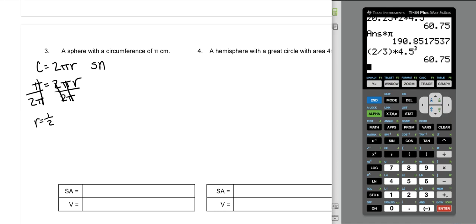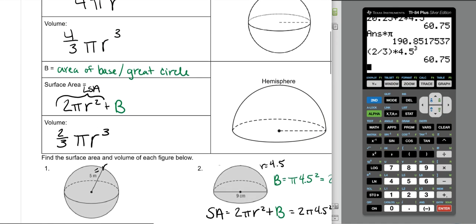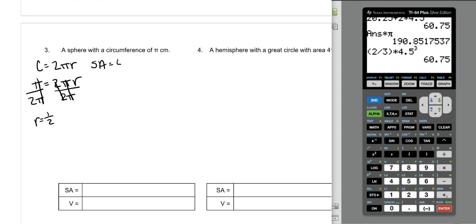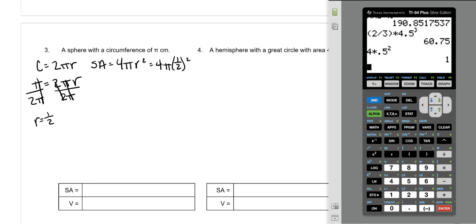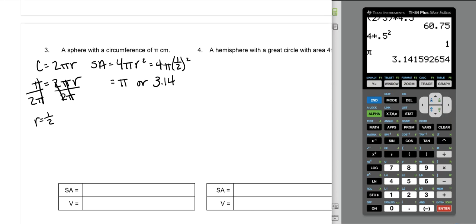Our surface area is 4πr². So 4π(1/2²). 4 times 0.5² is 1, which means our surface area is 1π or just π, or 3.14 square centimeters.